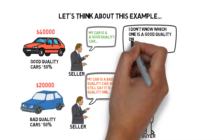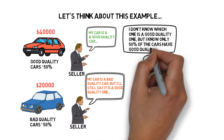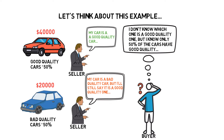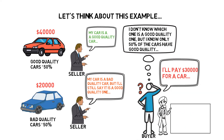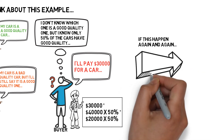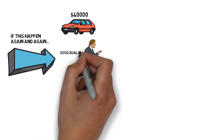However, although buyers cannot tell if a specific car is good or bad, they definitely know that 50 cars in the market will be bad quality. They realize there is a 50% probability of getting a good car and a 50% probability of getting a bad one. Considering this mathematical probability, the highest bid price they can offer for any specific car is $30,000.